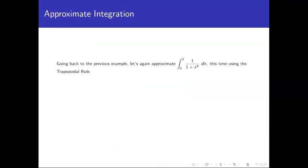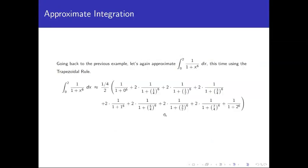Going back to the previous example using the trapezoidal rule: we already know the endpoints of the intervals. The first and last terms get a coefficient of 1, all middle terms get a coefficient of 2, and out front we have delta x (which is 1/4) divided by 2. We just plug the actual endpoints into the function and apply the formula. Typing that into a calculator gives approximately 1.0408.